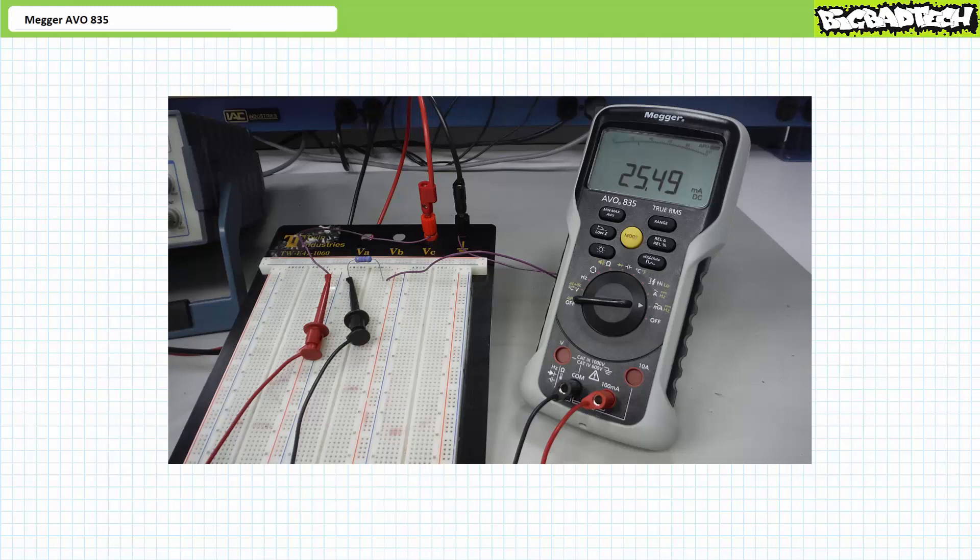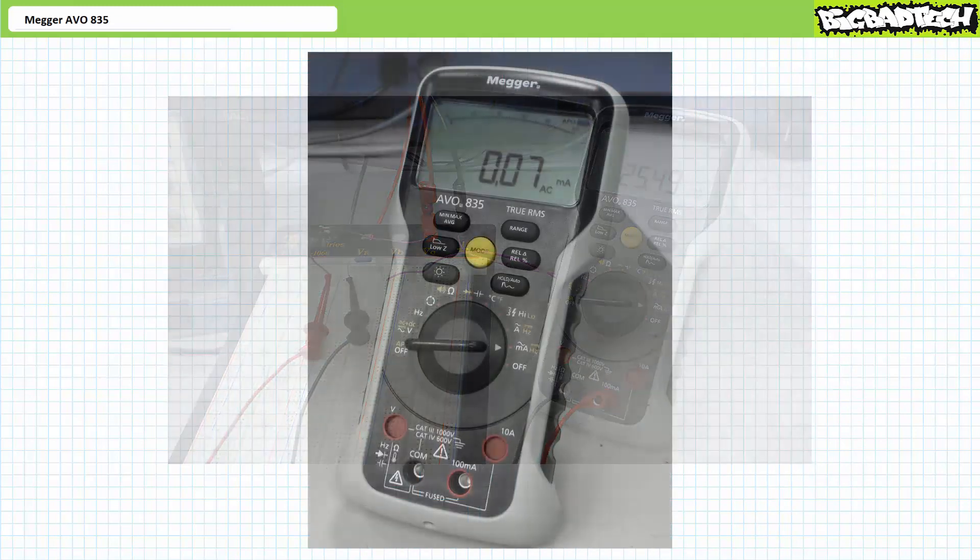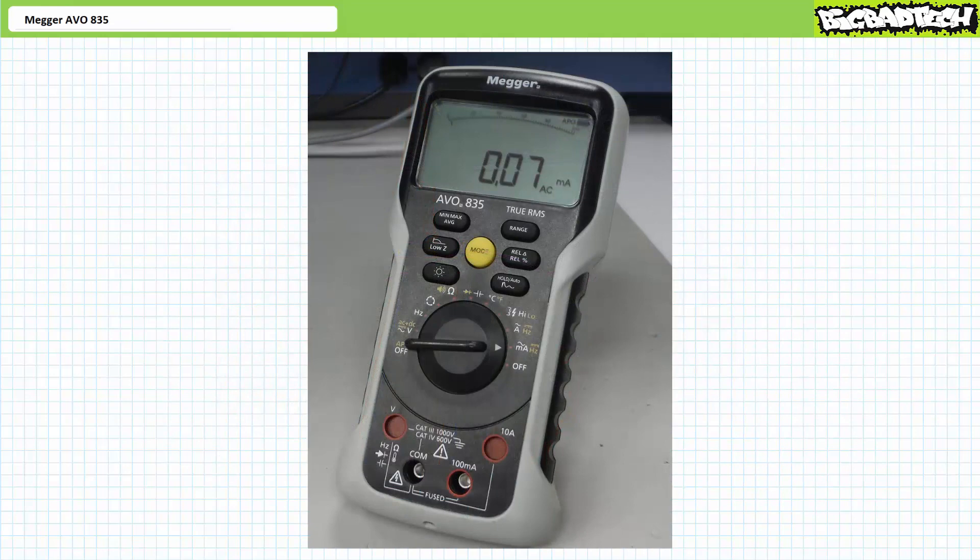All right, before we wrap this lecture up, let's quickly learn how to replace fuses on the Megger AVO835 digital multimeter. The ammeter inputs in the Megger AVO835 include fuses designed to rupture in the event the ammeter is deployed incorrectly. Fuses are inexpensive, sacrificial elements designed to blow before anything else more expensive does.